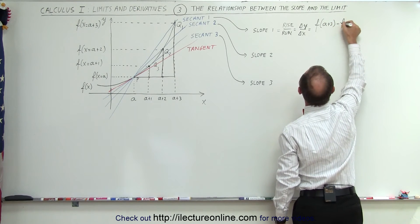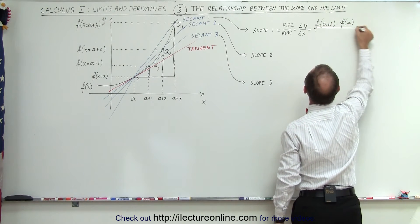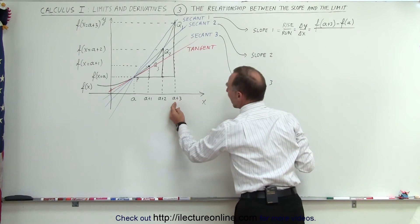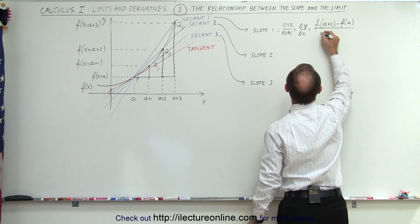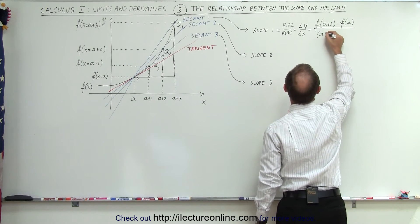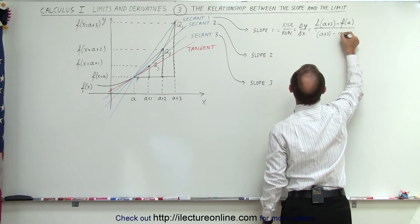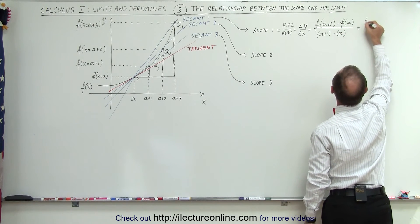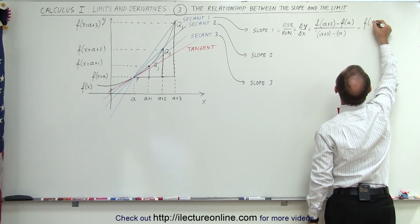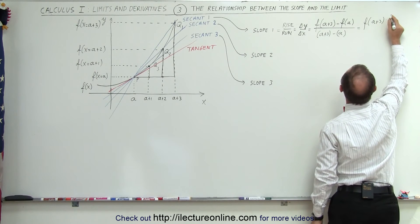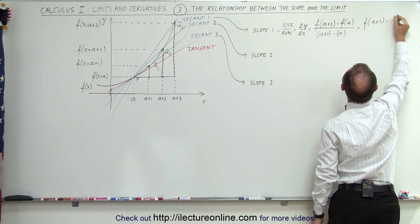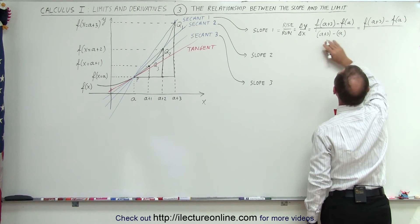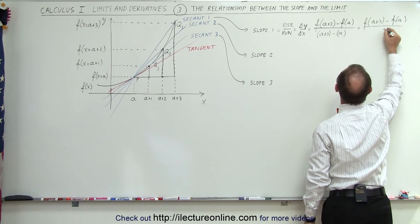So that would be equal to the function evaluated at A plus 3, minus the function evaluated at A, divided by the delta x, which is A plus 3 minus A. That gives us F(A+3) minus F(A), divided by 3.